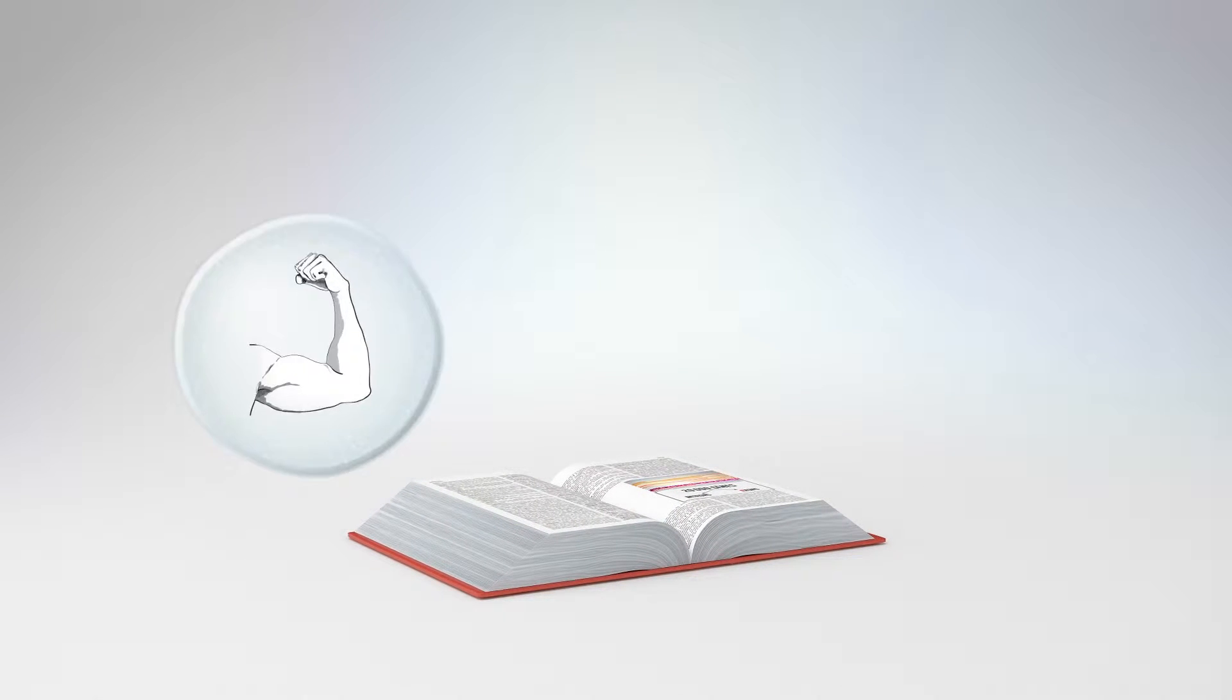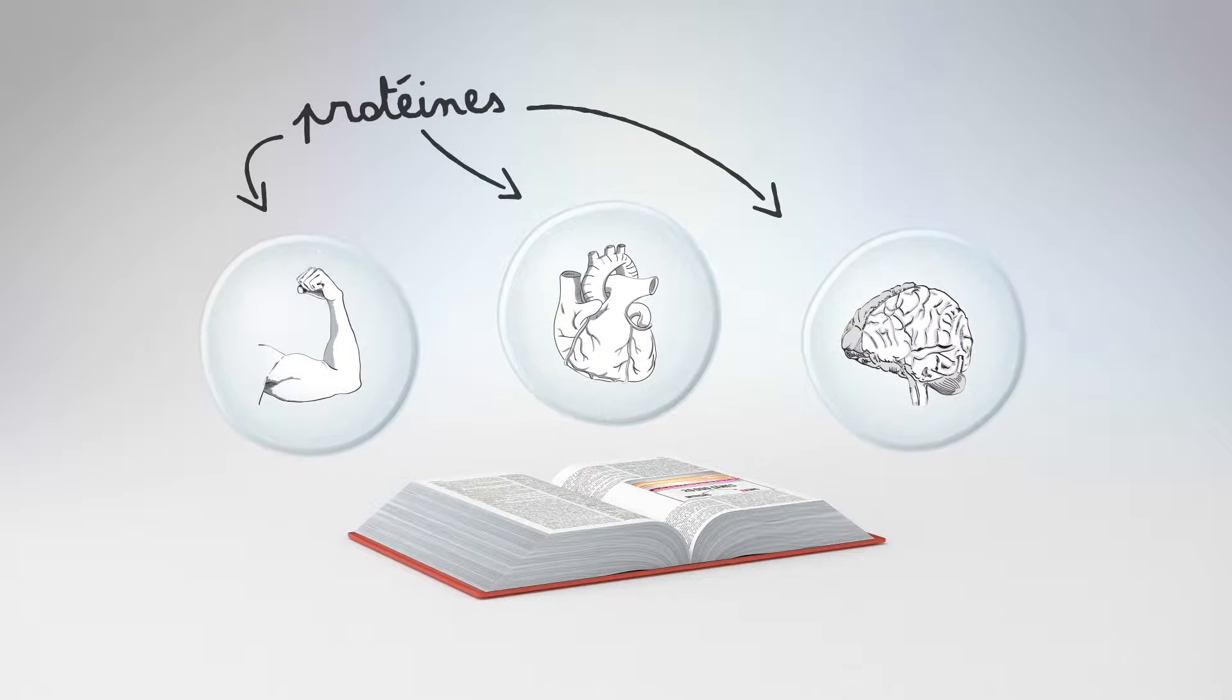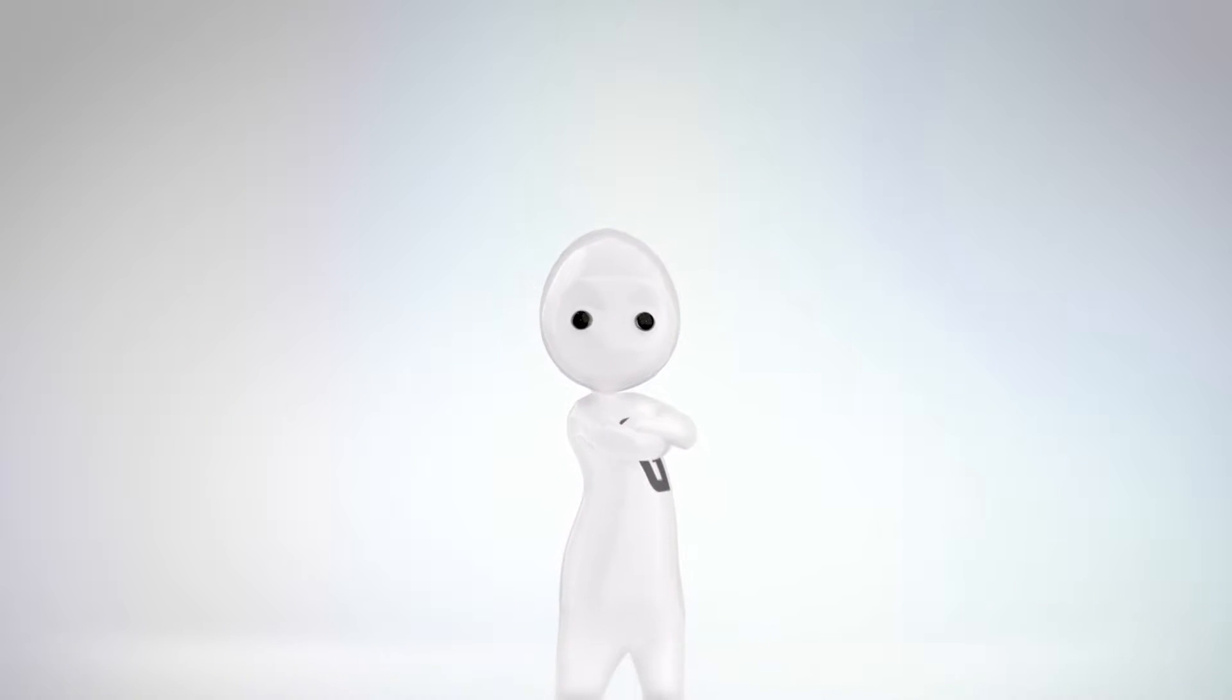Ces recettes utilisent les exons pour produire ou coder les protéines du corps. Par exemple, dans les muscles, le cœur ou le cerveau.